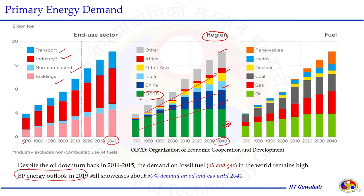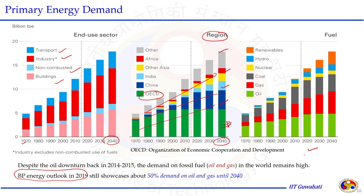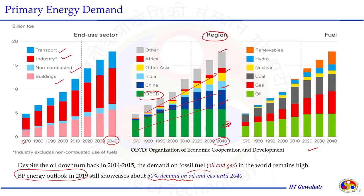To meet this energy need, there are several forms of energy: renewable, hydro, nuclear, coal, gas and oil. In the third graph, the energy supply in different forms — renewable, hydro, nuclear, coal, gas — and their share of total energy supply is shown. The BP Energy Outlook published in 2019 stated that 50% of the total world energy demand will still be supplied by oil and gas until 2040. Despite the oil price crash in 2015, demand for fossil fuels like oil and gas remains high, and the world is still dependent on fossil fuel energy.